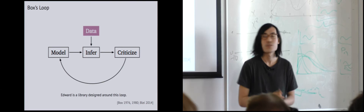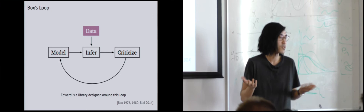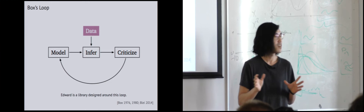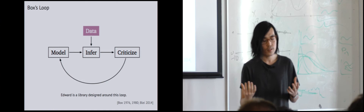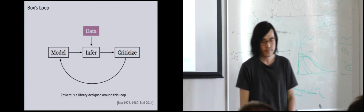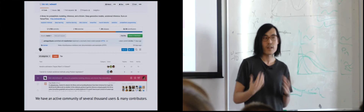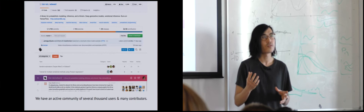We call this process Box's loop, named after George Box. Edward is really a library designed around this loop — Edward is Box's middle name, and we follow the programming semantics of naming systems after famous fellows. Edward has a bunch of classes to support many different compositions of models, many different choices of inference algorithms, and many different ways to do criticism. It tries to ingrain the philosophy that practical data analysis all lives through this cycle. We have an active community of several thousand users and many contributors, with many commits daily, and the community has really grown for the past year and a half.